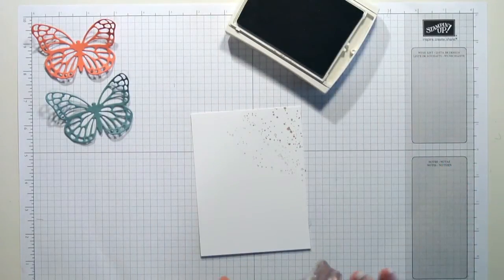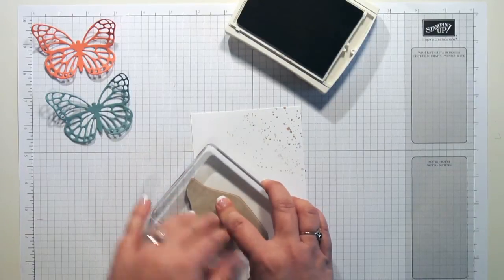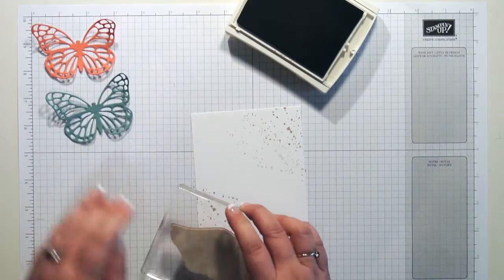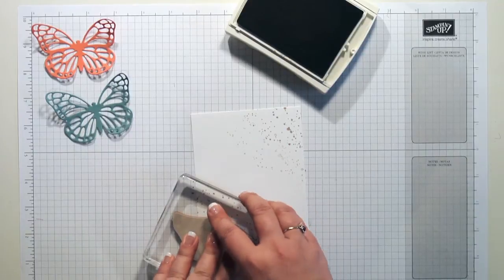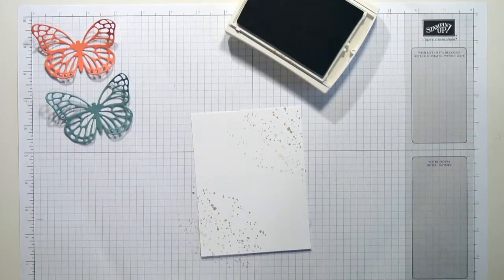And I want to ink it up again and do the same thing in the other corner. Again, stamp it down and then stamp again without re-inking, because that's going to give me my lighter color, and that's the look I'm going for there.